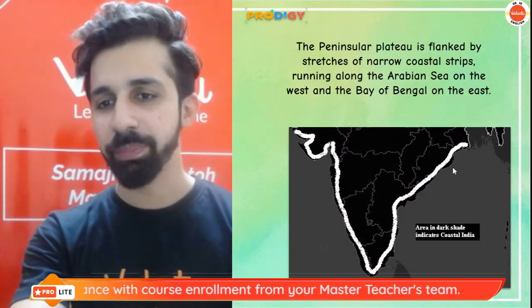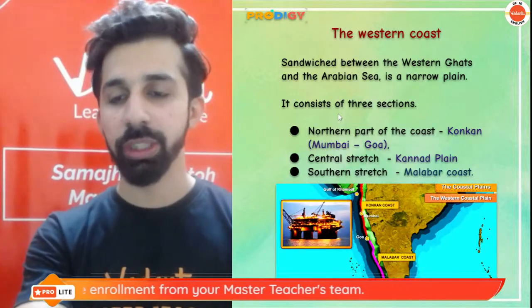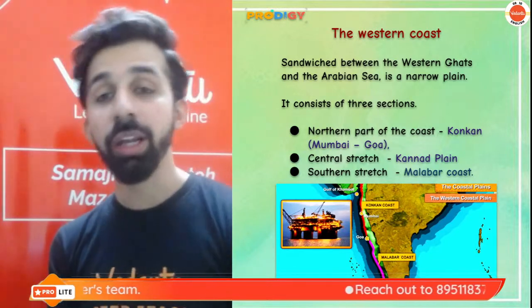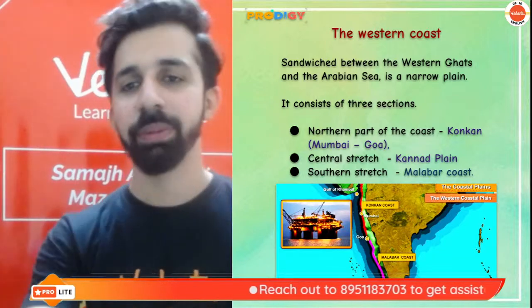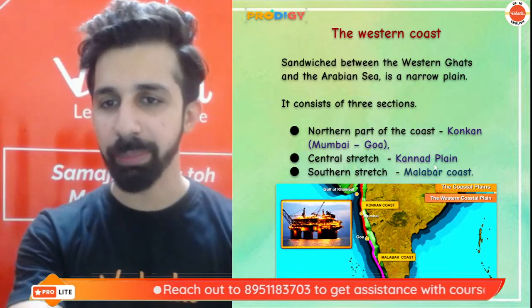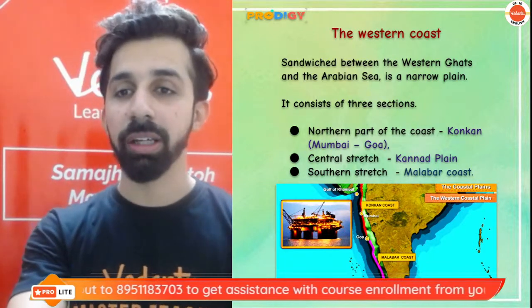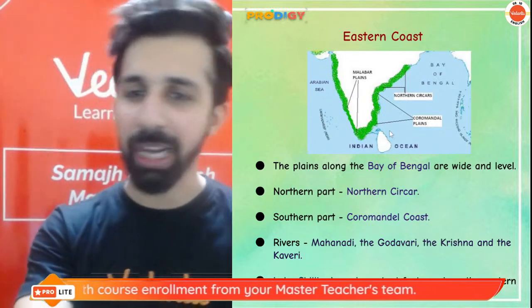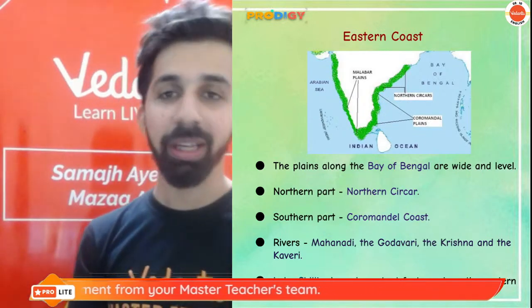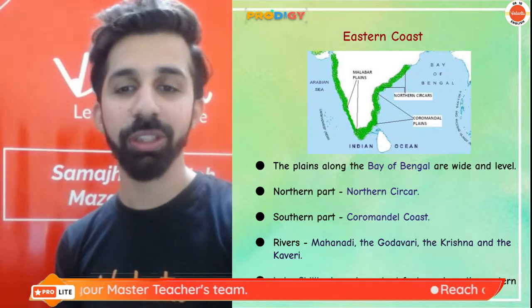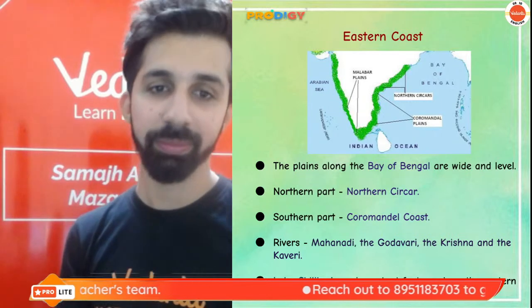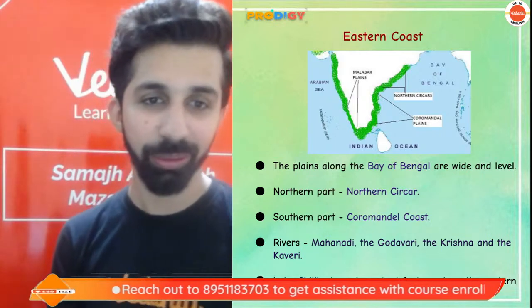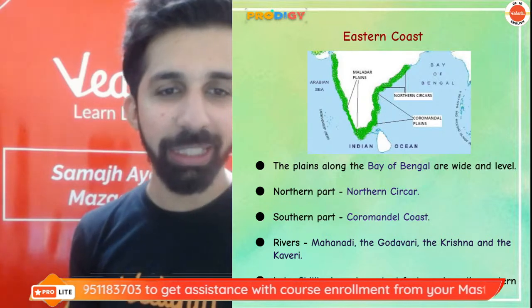We have two coastal plains: western coastal plain, which borders the Arabian Sea, and eastern coastal plain, which borders the Bay of Bengal. The western coastal plain is divided into three parts: Konkan coast, Karnada plain, and Malabar coast. The eastern coast is classified into Northern Sirkar and Coromandel coast. An important feature of the eastern coast is Lake Chilika in Odisha.